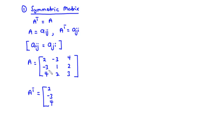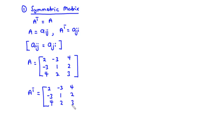For row 2 we have negative 3, 1, 2 — so column 2 is negative 3, 1, 2. And for row 3 we have 4, 2, 3 — so column 3 is 4, 2, 3.